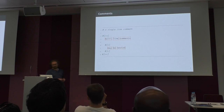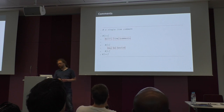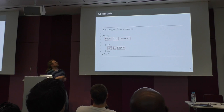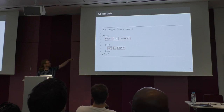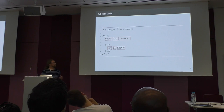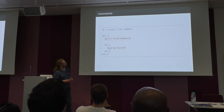The CMake language supports two types of comments. There's the single-line comment introduced with the hash. And there's also multi-line comments, which is not very well known. The highlighting engine in my slides does not recognize them.